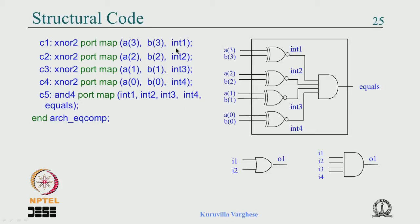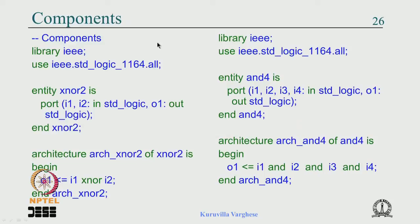This is called positional association — the formals and actuals are associated in a positional way. Ultimately someone has to describe the components, whether it is done before, in a library, in a different project, or in the same project in a different file. Once this is done, the structural coding is complete and you can simulate and synthesize it.